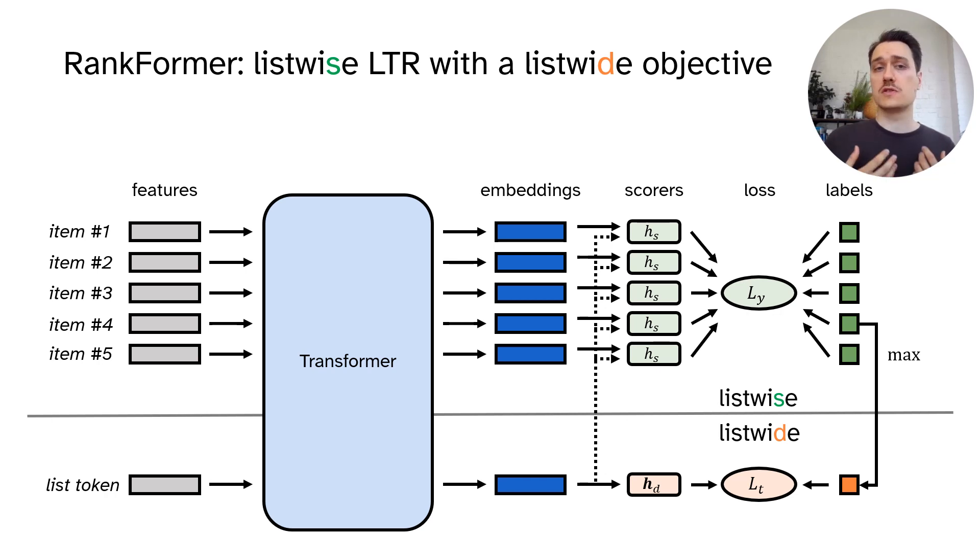Overall, the RankFormer thus considers both relative feedback at the item level and absolute feedback at the list level.